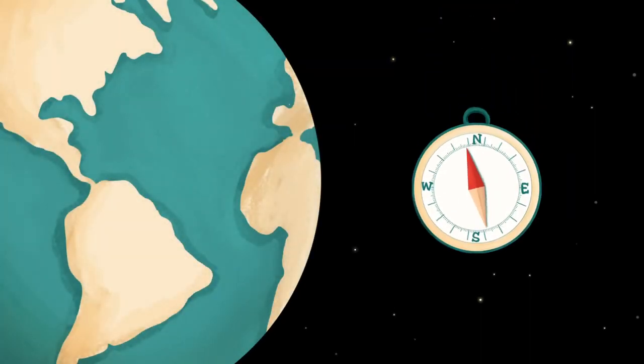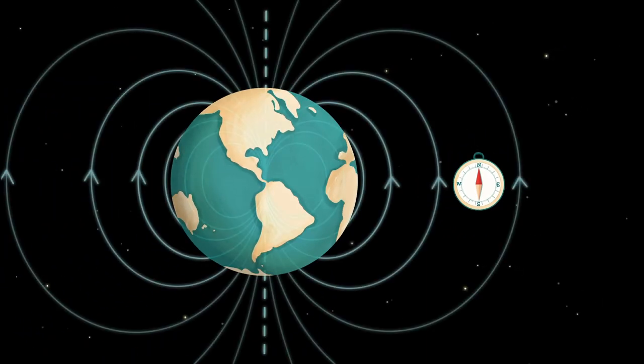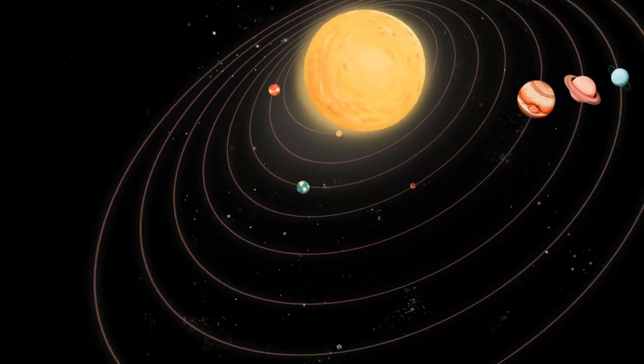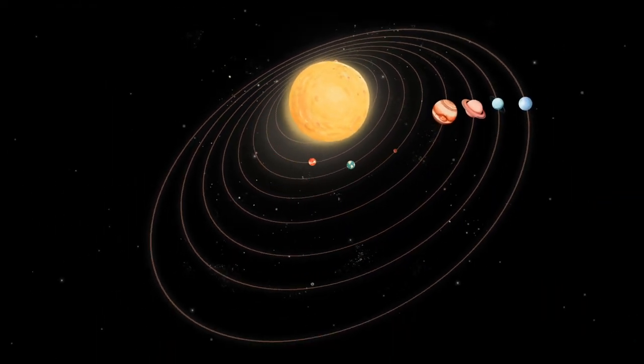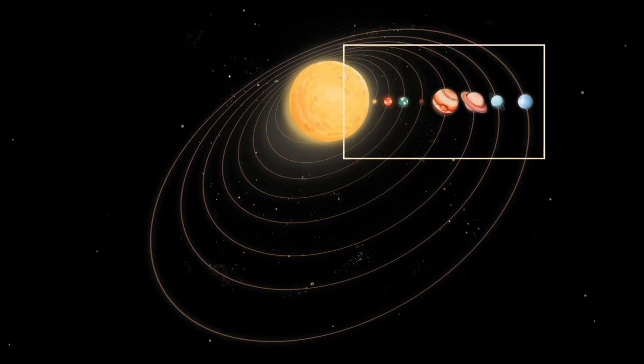Ever used a compass and wondered why it points to the North Pole? The answer is related to the magnetic field of the Earth. In fact, our entire solar system is filled with magnetic fields from various sources. Let's take a brief survey of solar system bodies with magnetic fields to understand them better.